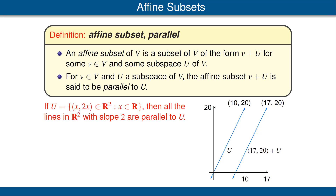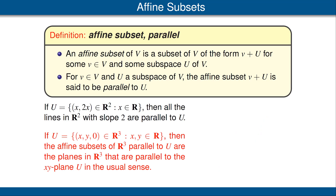For example, with vector space R² and the subspace of all vectors of the form (x, 2x), all lines in R² with slope 2 are parallel to U. As another example, let our vector space be R³ and let U be the set of elements of R³ whose third coordinate is 0 — often called the xy-plane. Then the affine subsets of R³ parallel to U are all the planes in R³ parallel to the xy-plane in the usual sense.